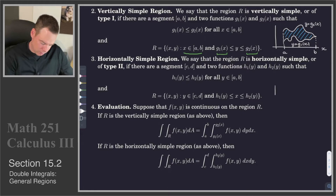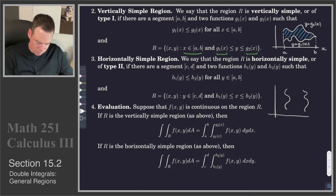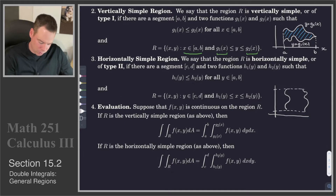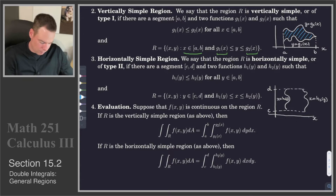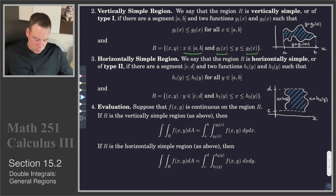A horizontally simple region is one where the left and right boundaries are given by curves. Our y values range from c to d, but x is given by curves: the left boundary is x equals h1(y), and the right boundary is x equals h2(y). The region is the set of all points (x, y) such that y is between c and d, and x is between h1(y) and h2(y).